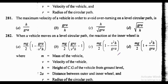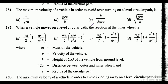Question 281: the maximum velocity of a vehicle in order to avoid overturning on a level circular path. The correct answer is option D, that is under root of gra upon h.